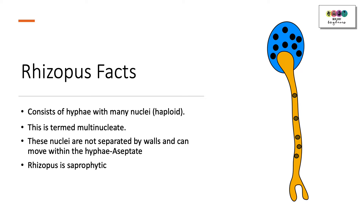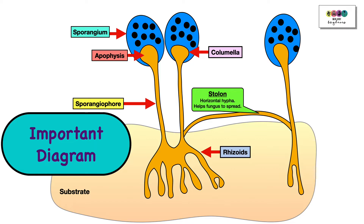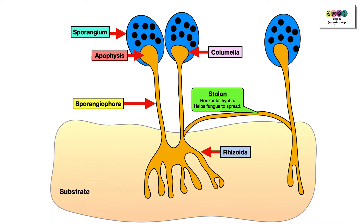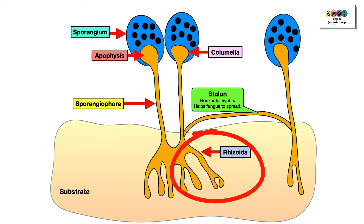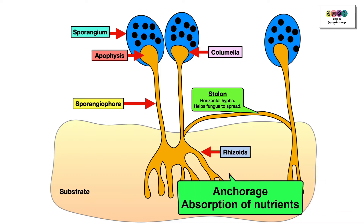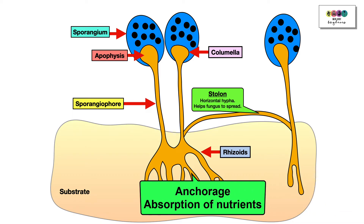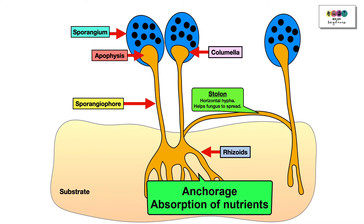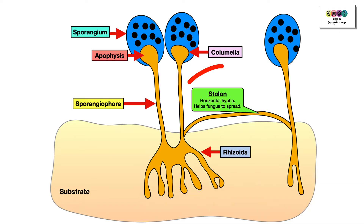Rhizopus is saprophytic, feeding on dead organic matter and growing on bread and fruit. When revising Rhizopus, it's important to label all parts in the diagram. Starting at the bottom, the rhizoids are hyphae that grow downwards into the substrate — into the bread or fruit — anchoring the fungus and absorbing nutrients after extracellular digestion. The stolon grows horizontally across the substrate, helping the fungus to spread.